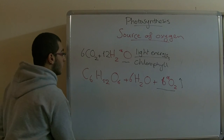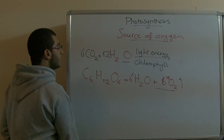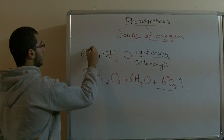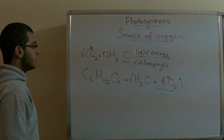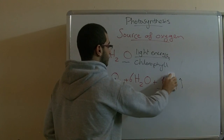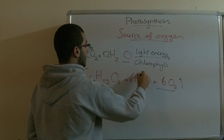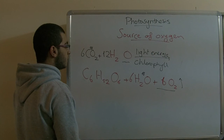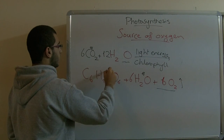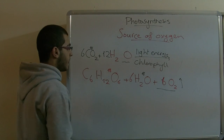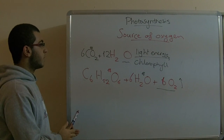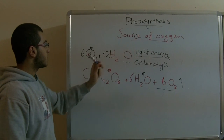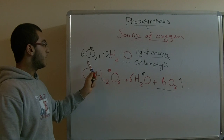In the second experiment, they repeated the same process but used normal oxygen in water and the radioactive isotope with the carbon dioxide instead. The results showed that the produced oxygen was the normal one, while the radioactive oxygen remained in the water and also appeared in the glucose. From these two experiments, they concluded that the source of oxygen produced in the photosynthesis process is from water, not carbon dioxide.